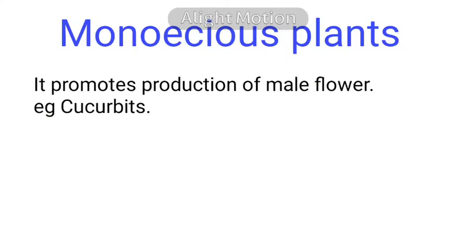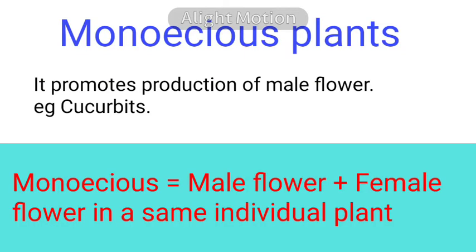Gibberellin promotes the production of male flowers in monoecious plants. Monoecious means plants having both male flowers and female flowers. Examples include cucurbits and even the banana tree, which are also monoecious plants.